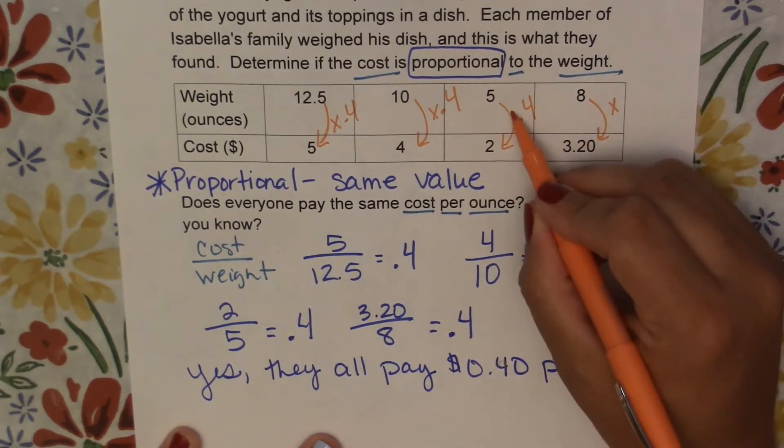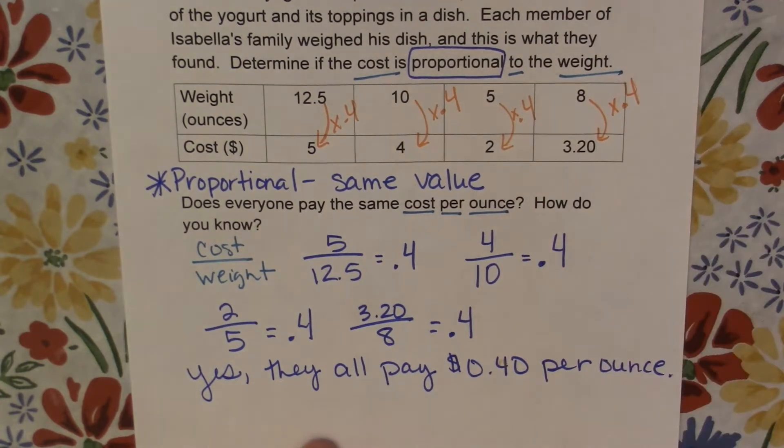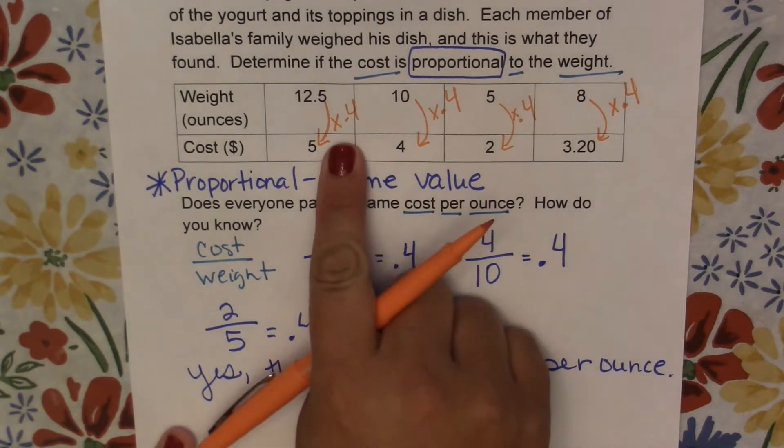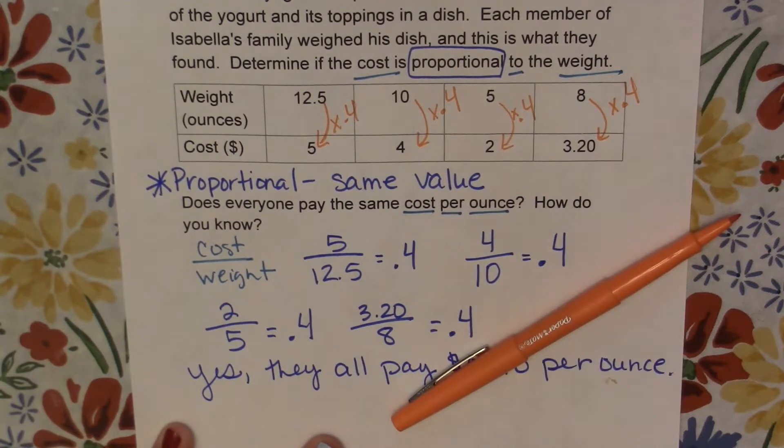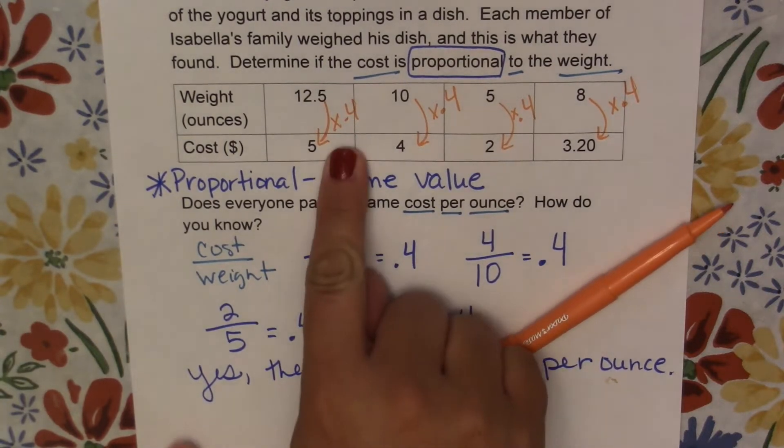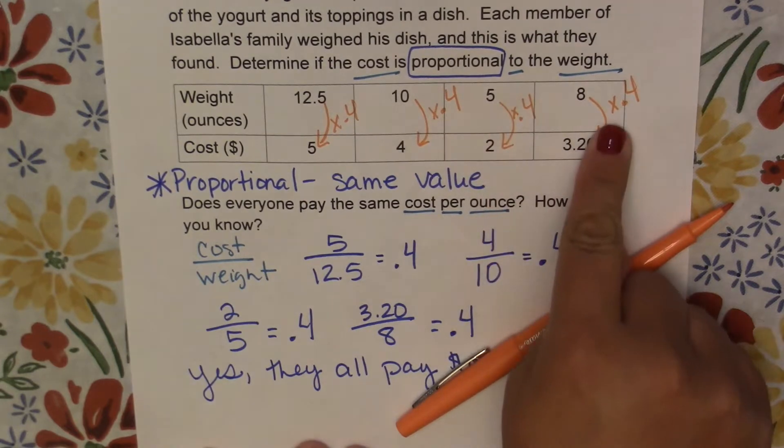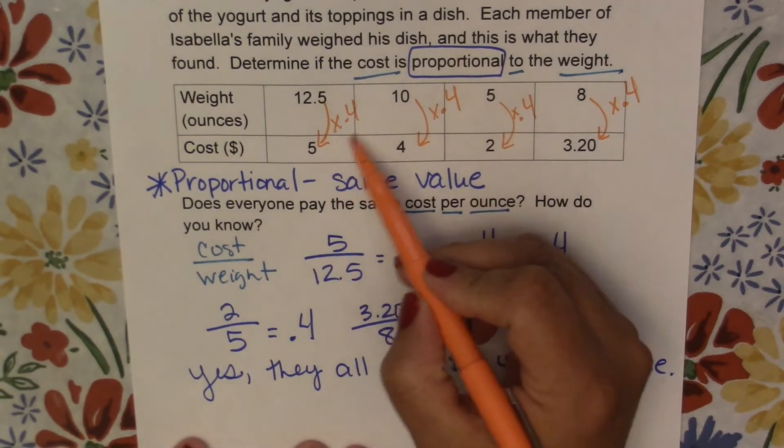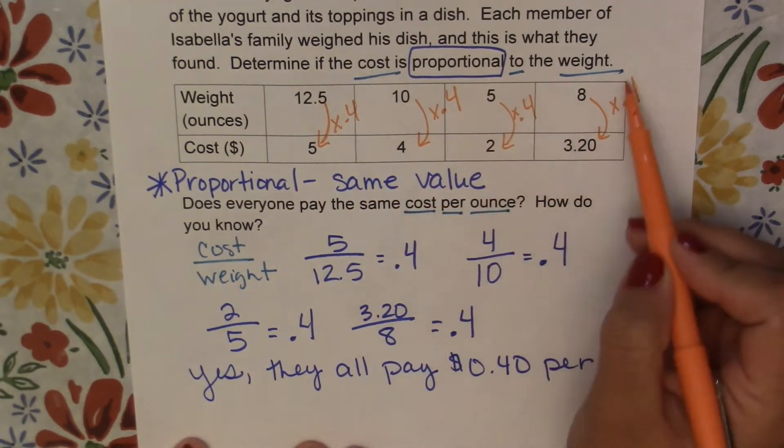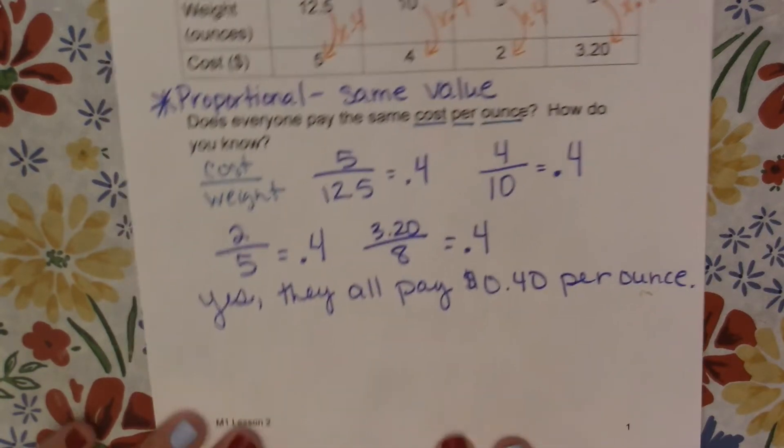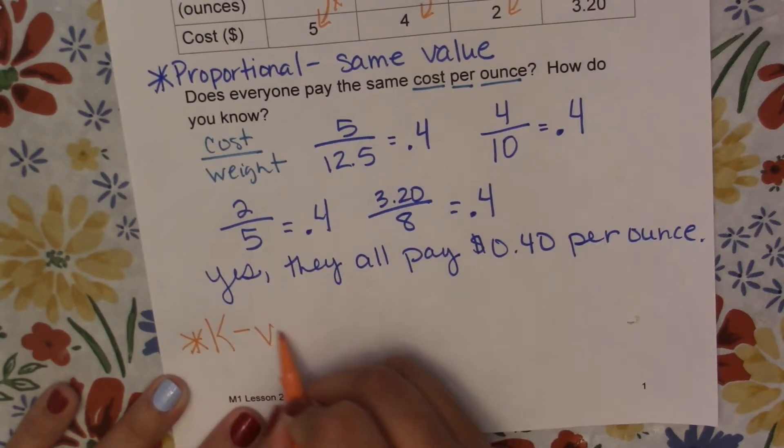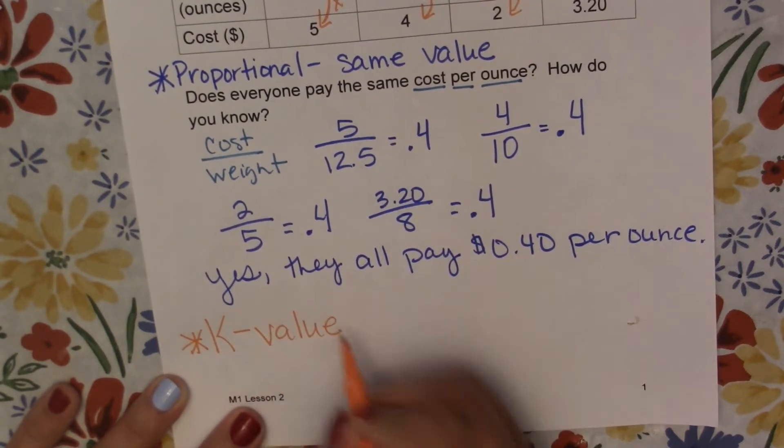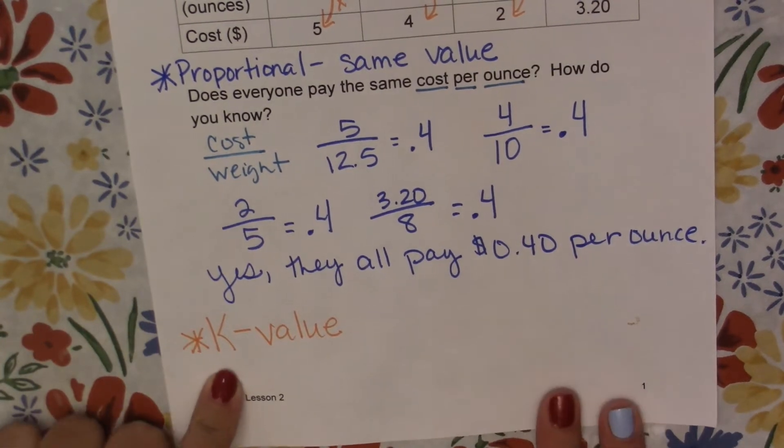When we have something like this, that means that our cost is proportional to the weight, because when we divide those out, we get that same value. Now this value right here has a special name, and its special name is called the K value. So you're going to want to add this in for a definition.